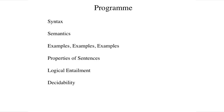In this lesson, we proceed through the same stages as in our treatment of propositional logic. We start with the syntax and semantics of the language, then present a series of examples of increasing complexity that illustrate various features of that language. We then discuss the properties of Herbrand logic sentences individually and define logical entailment. Finally, we discuss the decidability of various questions in three subsets of Herbrand logic.